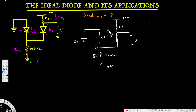Using that zero voltage node, we can find id2: 10 minus 0 divided by 5k gives us id2 = 2 milliamps. We can also calculate i1: 0 minus (minus 10) divided by 10k gives us i1 = 1 milliamp.